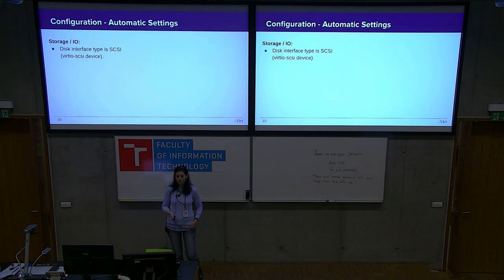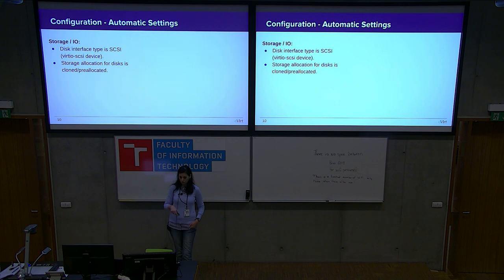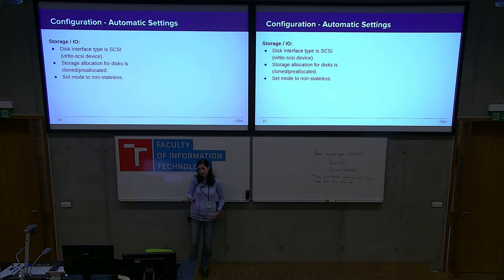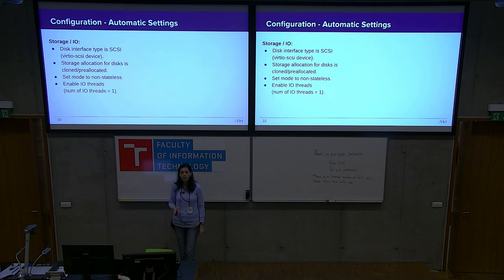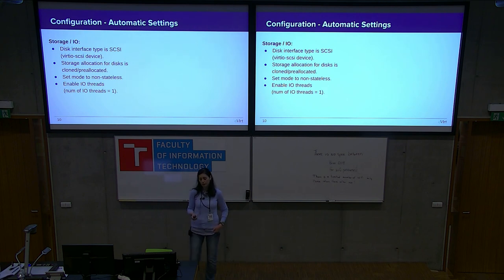Continuing with automatic settings for storage I/O: the default disk interface is set to VirtIO-SCSI because testing showed performance is increased in most cases. Storage allocation is pre-allocated instead of thin allocation, because that way write and read operations are faster. The VM mode is set to non-stateless, so we don't need to keep state and performance is not decreased by delta management. We also enable I/O threads — a dedicated thread on the VM for serving I/O operations. The default value is one, which testing showed is suitable for most cases, but it can be changed.